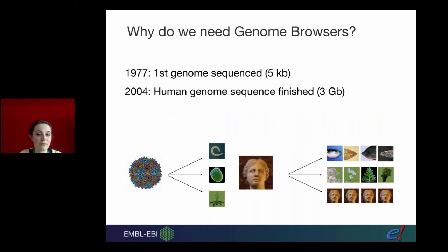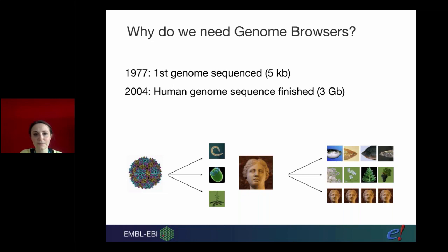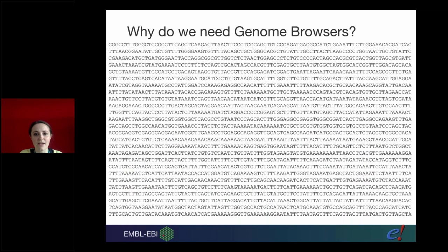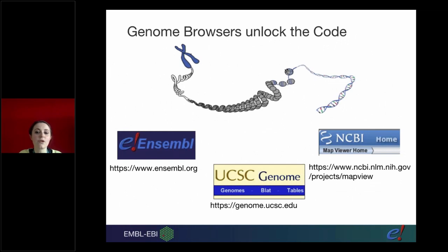Ensembl is a genome browser, and genome browsers are very important because they allow us to deal with the vast amounts of data that a genome is made up of. Human genomes are about three gigabases, and if you look at a wheat genome it's at least ten times as big as that. This data is utterly meaningless by itself - it only has value when you incorporate and annotate things onto it. Genome browsers are one of the ways that we unlock the code of genomic data.